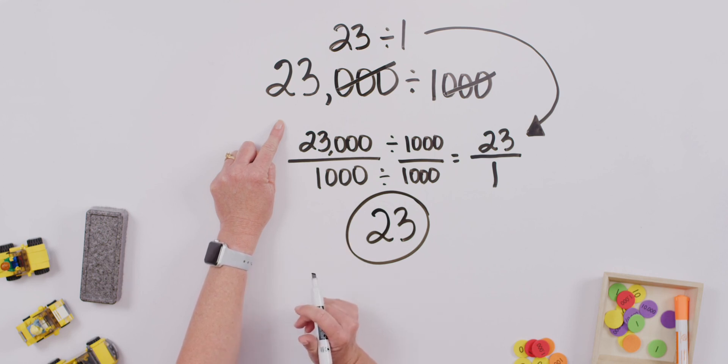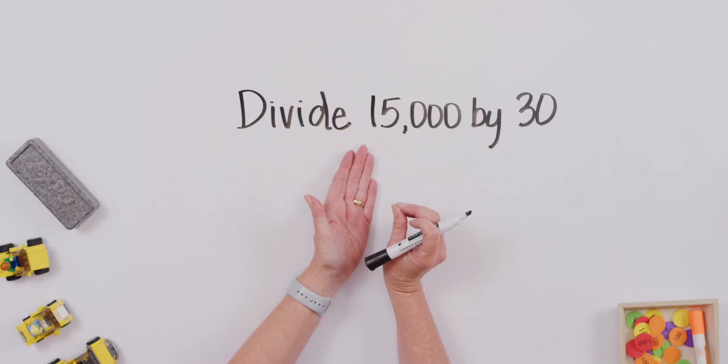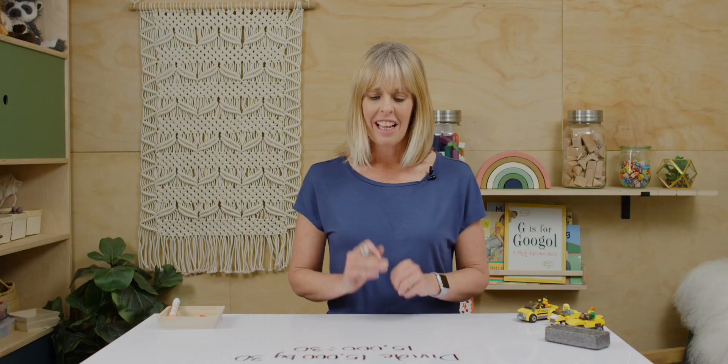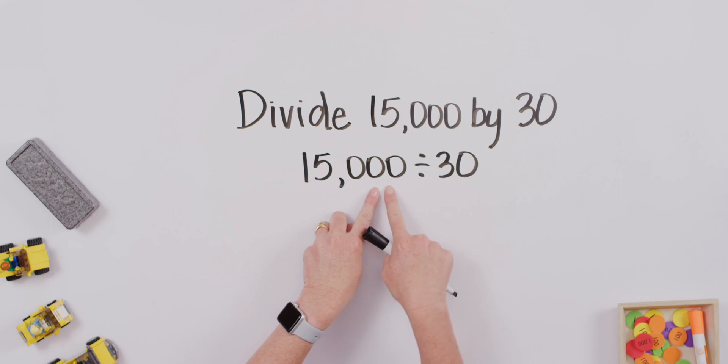Good job. See, not as scary as we thought it would be using these big numbers. Working with zeros does make it a little easier for us. Let's move on. We are now going to divide 15,000 by 30. How would we write this out as an expression? Now, I use that word expression to mean that I'm working with an expression that doesn't have an equal sign. So this, for example, would be an expression: 15,000 divided by 30. It's only called an equation when you have the equal sign and the answer. Let's work with this. I bet you're thinking of some strategies.